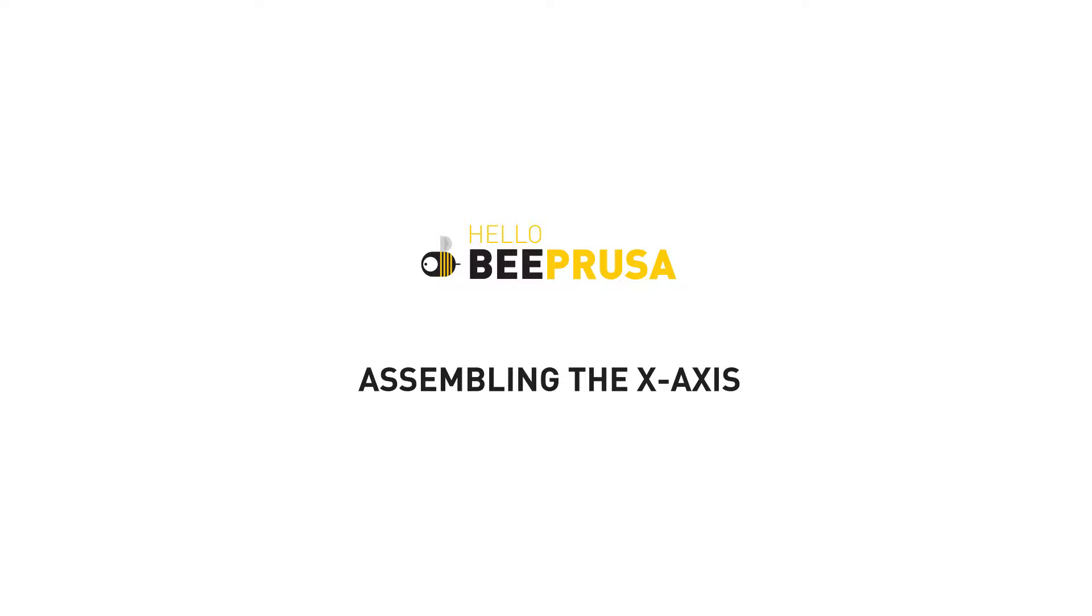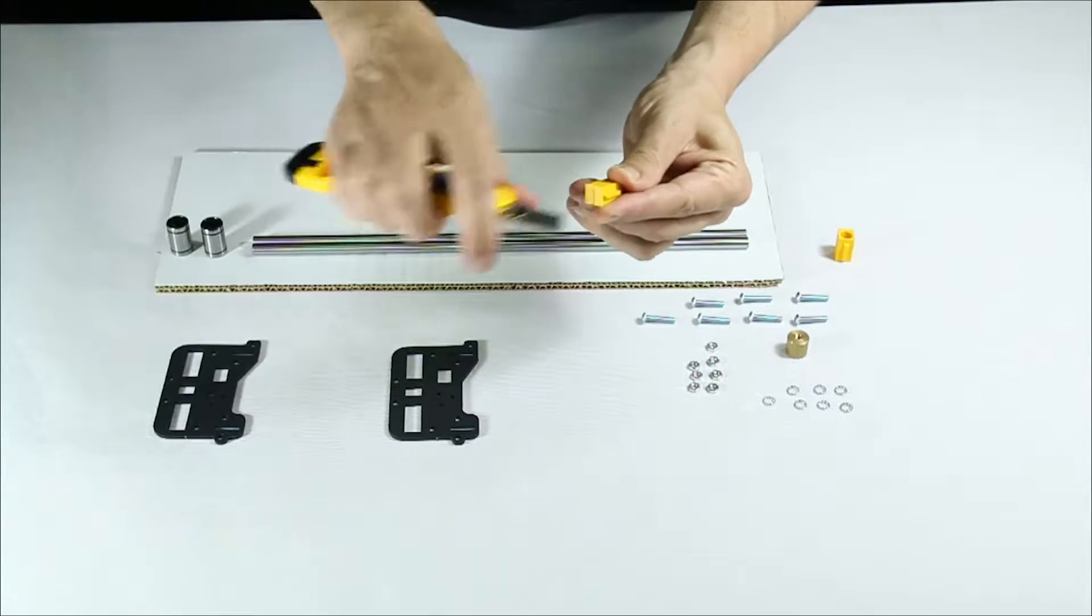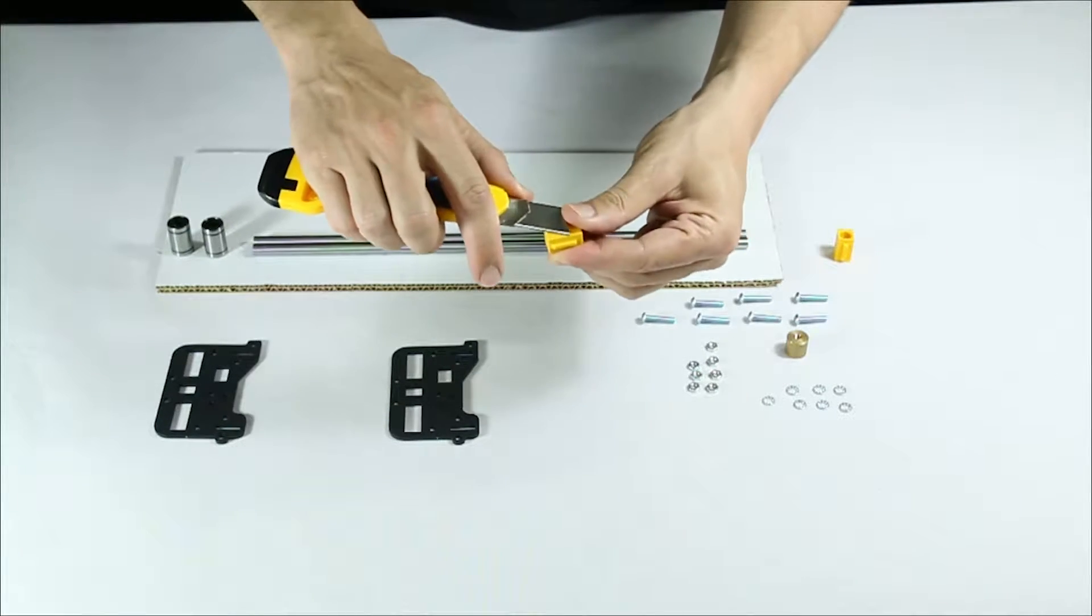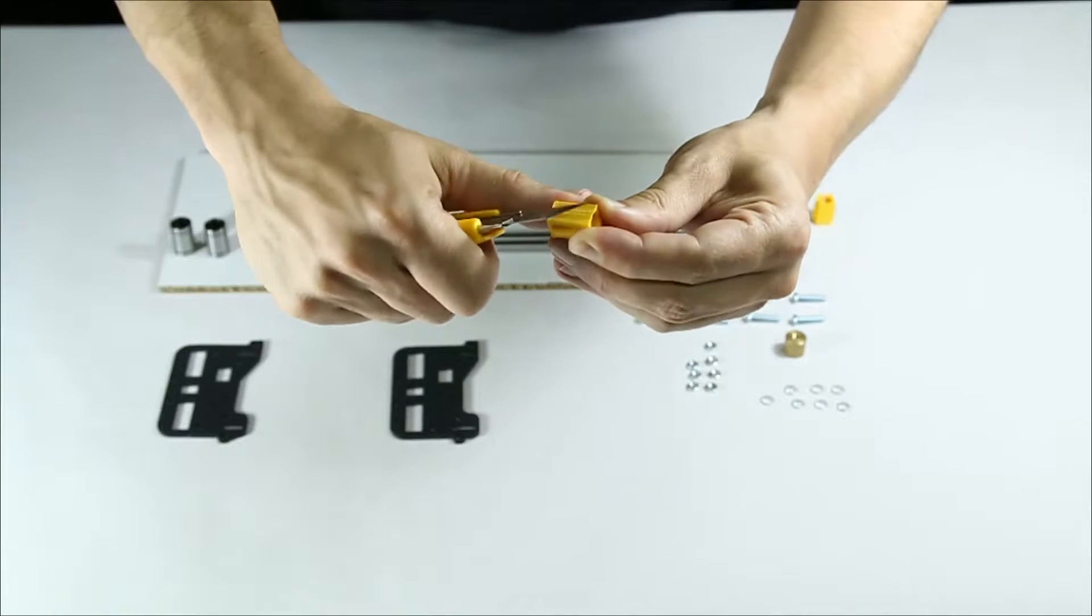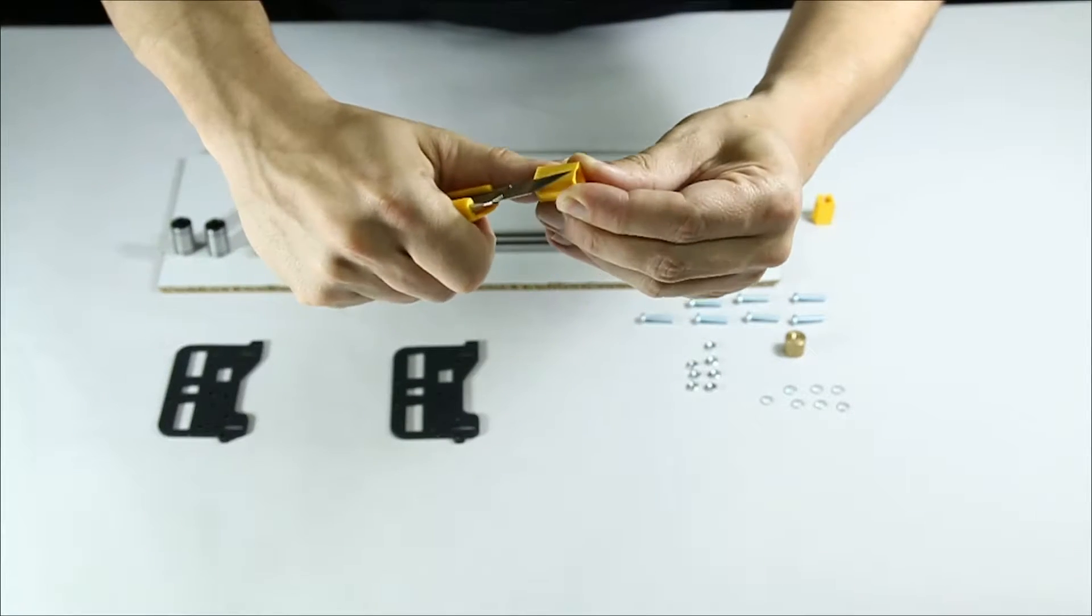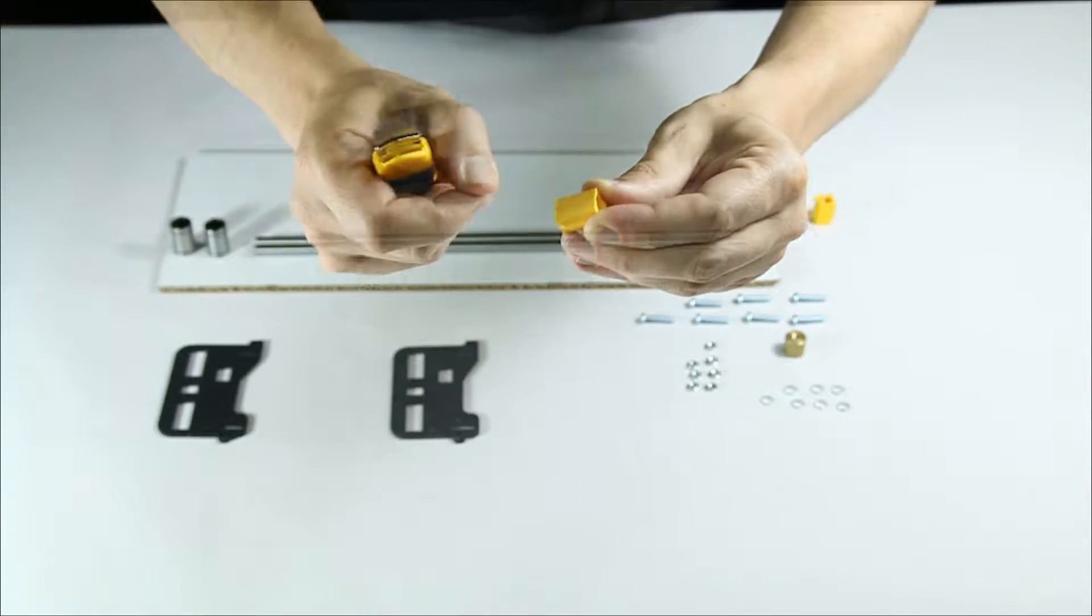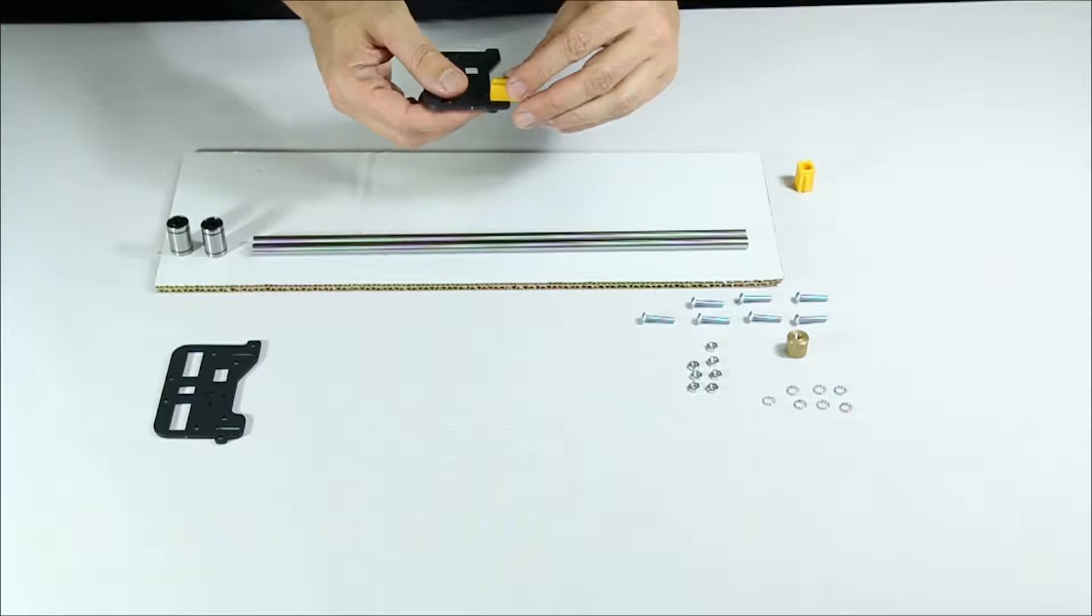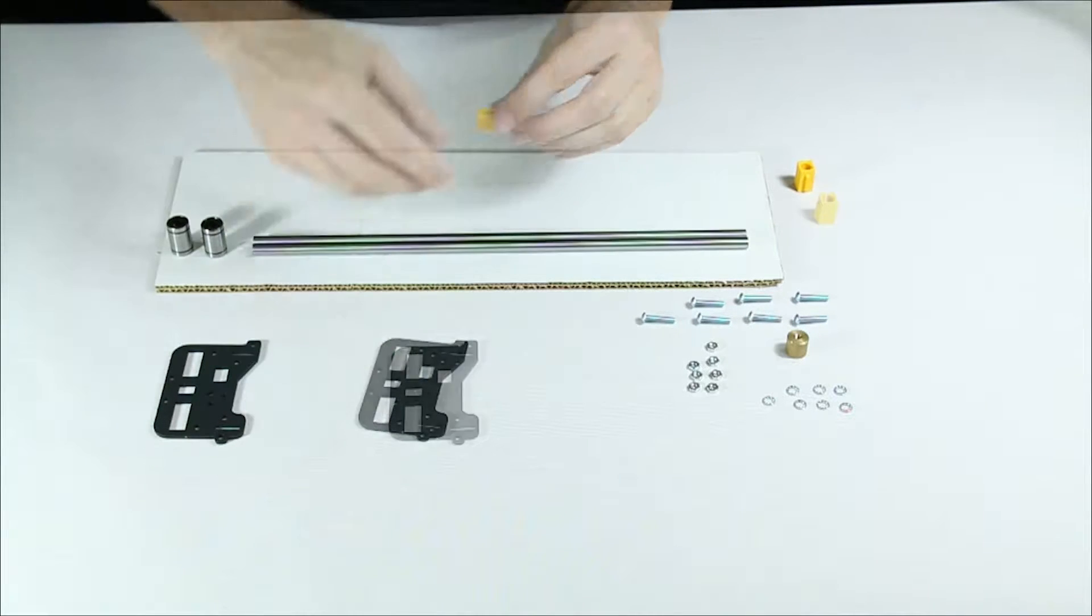This video will show you how to assemble all the components on the X-axis. We start by shaving off unwanted strands of PLA from the printed parts. You must be careful if you use a sharp blade. It's important to leave the holes clean so you won't have trouble fitting the guides and rods.